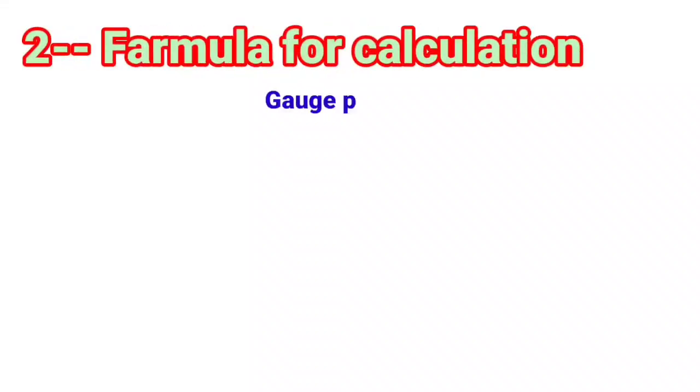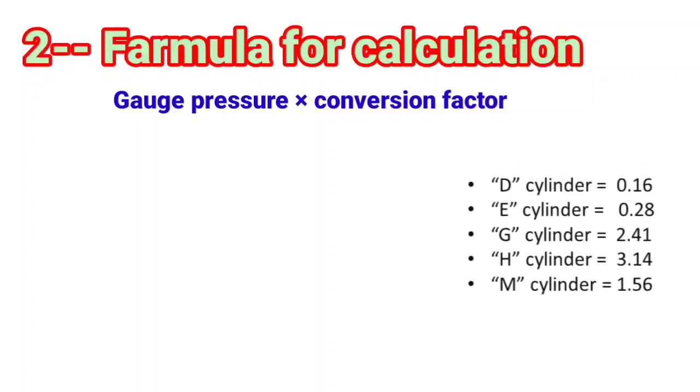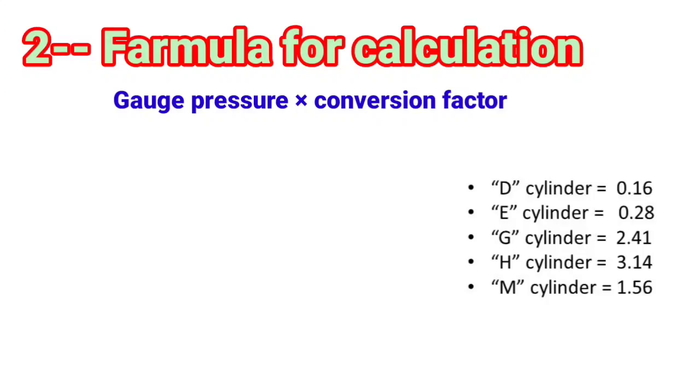Second formula for calculation is gauge pressure multiply by conversion factor. The conversion factor for each cylinder is different. But most commonly used cylinders are E and H cylinder. E cylinder has a conversion factor of 0.28 and H cylinder has 3.14.